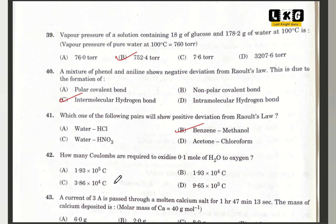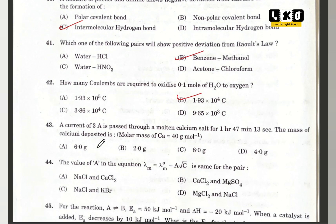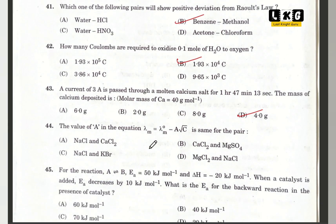Question number 42: how many coulombs are required to oxidize — from electrochemistry — option B is correct, 1.93 × 10⁴ coulombs. Question number 43: a current of 3 amperes is passed through molten calcium chloride for 1 hour 47 minutes. The mass of calcium deposited is option D — 4 grams. Question number 44: the value of A in the equation is the same for the pair — option C is correct, NaCl and KBr.